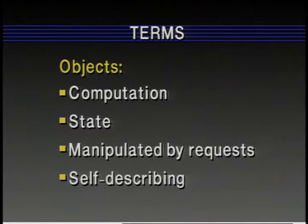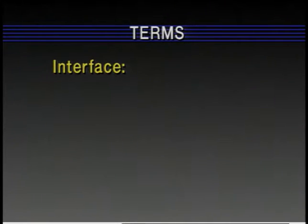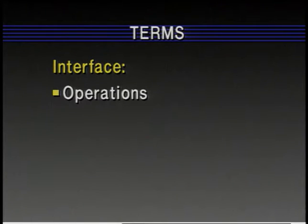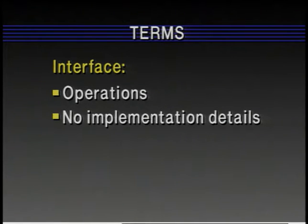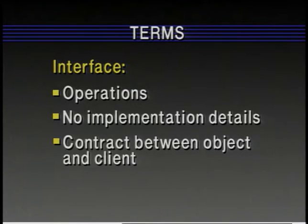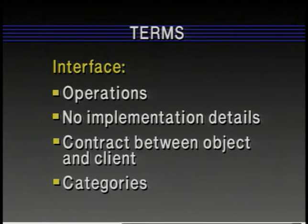Objects are self-describing, so when you walk up to an object, you can find out what it is. You don't necessarily have to know what an object is ahead of time to use it. An interface describes the shape of the object — what the operations are, how to make requests on the object — but it doesn't include anything about the actual implementation. In a sense, the interface is the contract between the object and its clients.